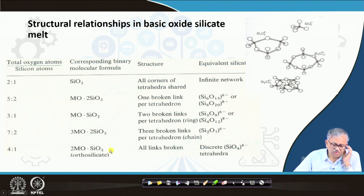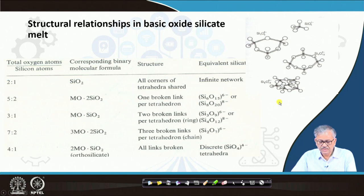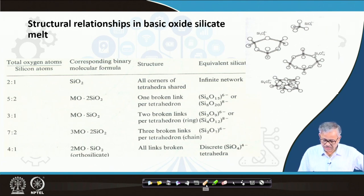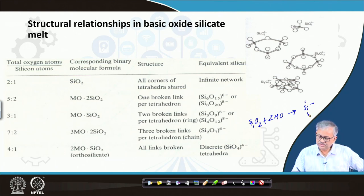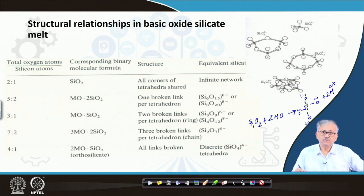When the MO:SiO2 ratio becomes 4:1, all four links are broken. In that case you get the discrete SiO4 4- unit. For SiO2 plus 2 MO: all links are broken, the silicon is isolated with four oxygen, plus 2 M2+ cations remain. All links are separated - this is the complete depolymerization.